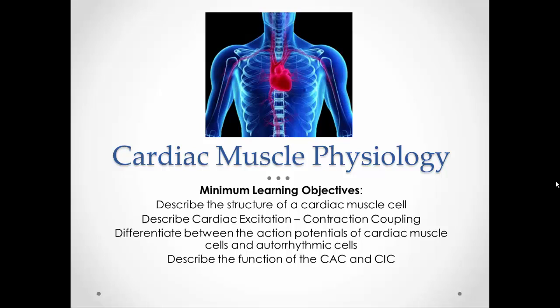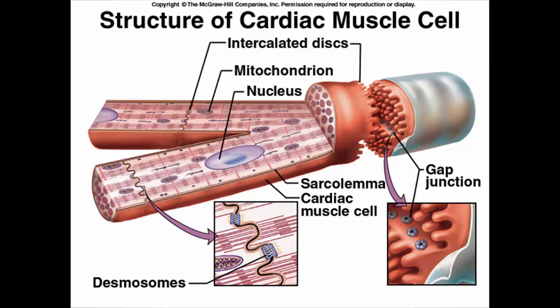There are actually two types of action potentials: one associated with the cardiac muscle cell itself, and another associated with what are called auto-rhythmic cells. Think about that word — auto-rhythmic, self-rhythm. These are cells that generate an action potential on their own and control when cardiac muscle cells contract. So we can have the heart beating without any central nervous system input. We'll end with how the central nervous system affects the heart — that's the CAC and the CIC. So let's first look at the structure.